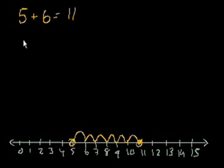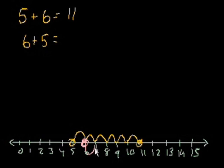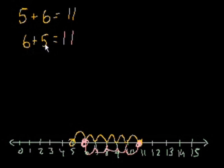Now I'm going to ask you a question: what is 6 plus 5? Can you switch the two numbers and get the same answer? Let's try it — start at 6, ignore the yellow for now, and add 5 to it: 1, 2, 3, 4, 5. We get to the same place. It doesn't matter what order — 5 plus 6 is the same thing as 6 plus 5.